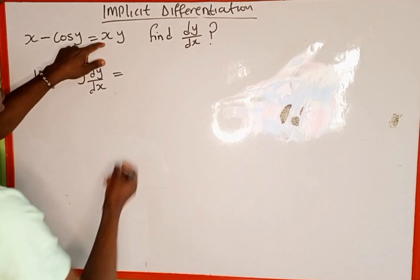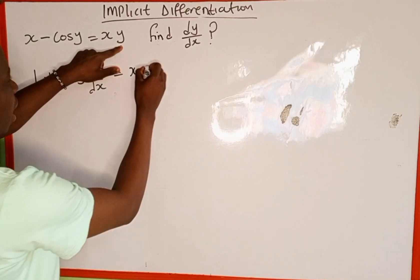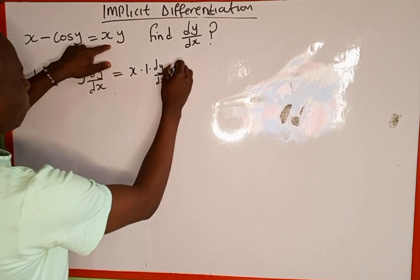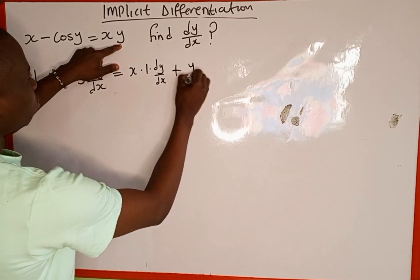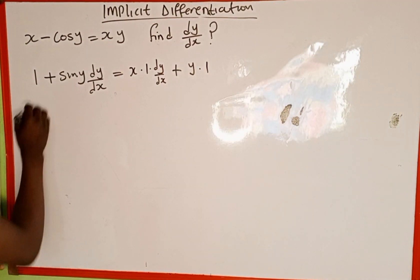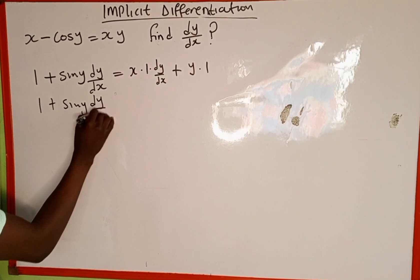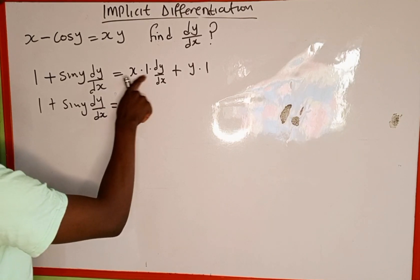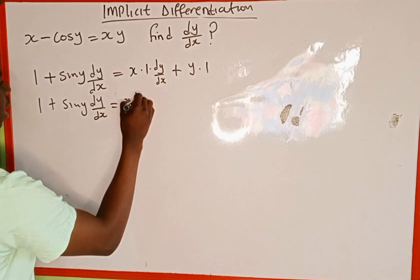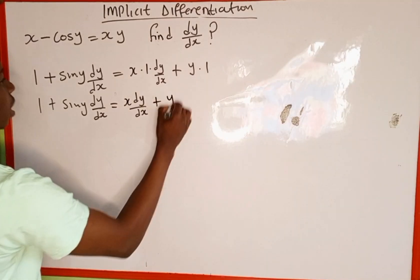On the right side, x is multiplied by y so we're going to use the product rule. We keep x constant then differentiate y — the derivative of y is 1 — and multiply by dy over dx. Then plus we keep y constant and differentiate x with respect to x, which is 1. So we have 1 plus sine y times dy over dx equals x times dy over dx plus y.